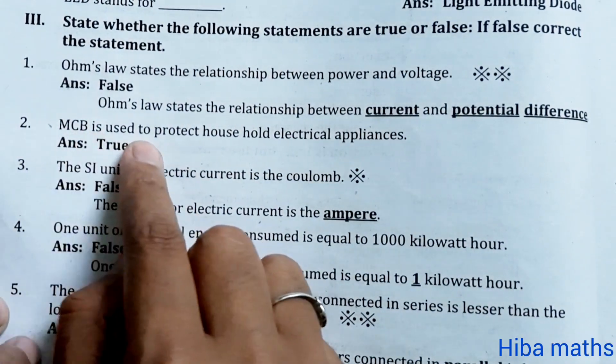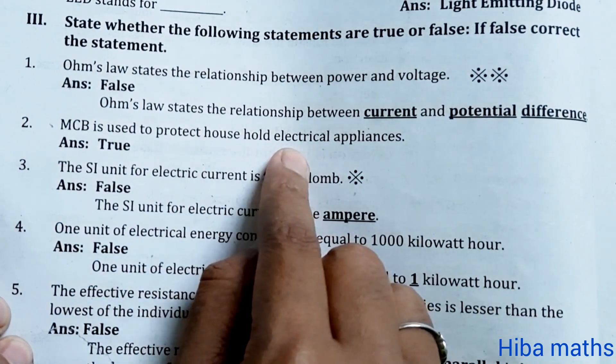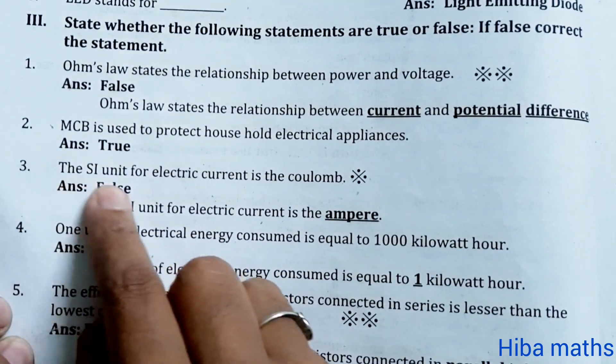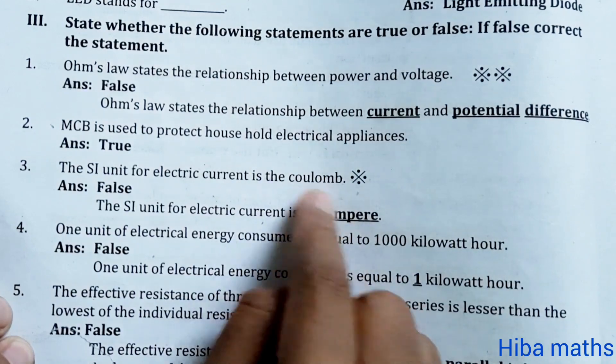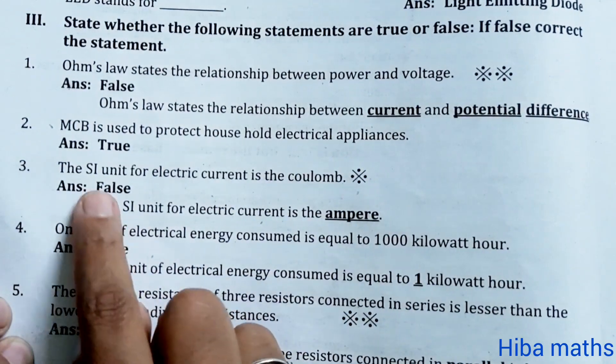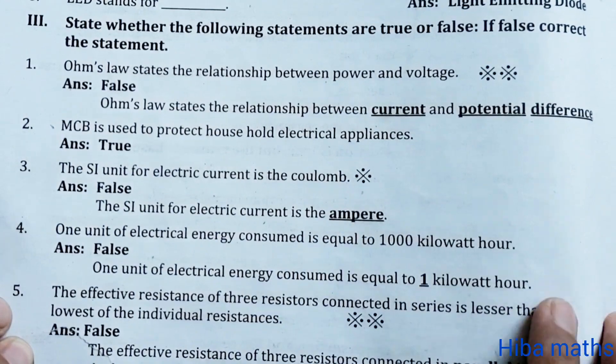Second question: MCB is used to protect household electrical appliances. That is true. The SI unit of electric current is coulomb. False. The SI unit of electric current is the ampere.